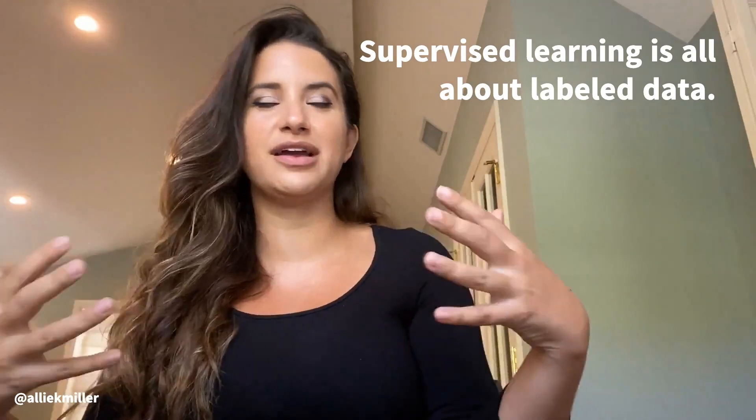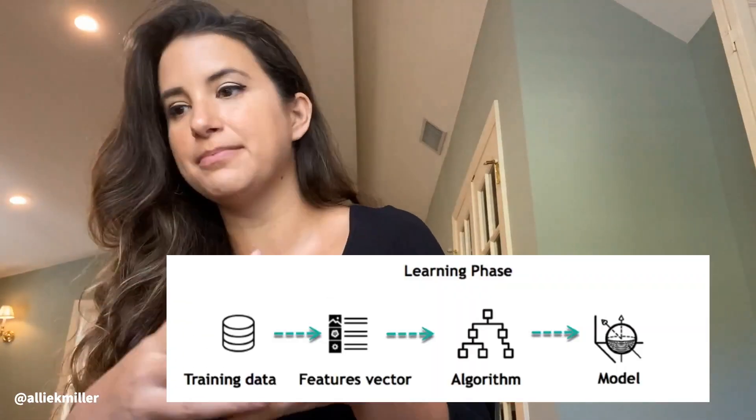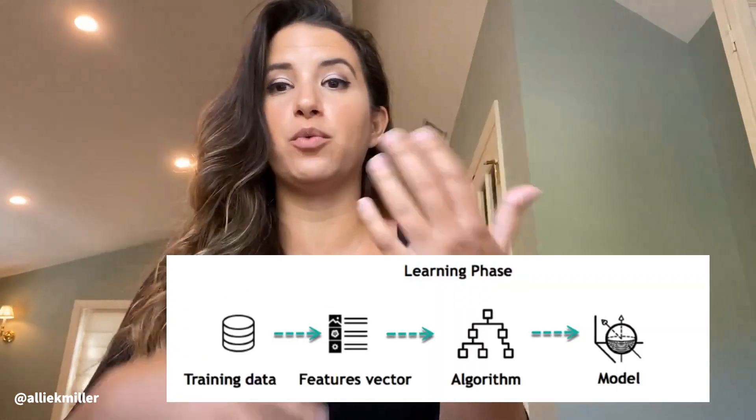Supervised learning — I always like to think of the analogy of a manager standing over your shoulder. You're really telling the system, telling the computer, what that data is. You're feeding the system tons of examples, telling it what is right, what is wrong, what is A versus B versus C. The whole goal is to train it on a set of known, labeled data, and then give it something it's never seen before. It's able to reflect on the original data set and tell you something about this new piece of data.